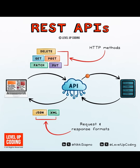Imagine you're using a weather app. You type in your city, hit search, and boom — forecast data appears. But how does that happen? That's where the REST API comes in. It's the middleman between your device, the client, and the server where all the data lives.